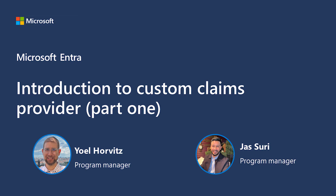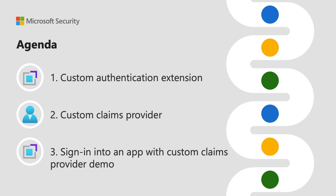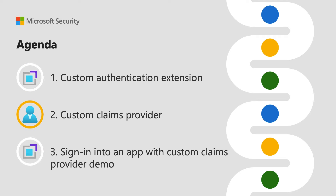Hello everyone and welcome to the Microsoft Entra Learning series. Joel Orwitz and Jess Suri here. We are Program Managers in the Microsoft Identity and Network Access Group. Thank you so much for joining us today. In this first part of the Custom Claims Provider videos, we will introduce you to the Azure Active Directory custom extensions, the Custom Claims Providers, and how they can help you customize security tokens issued by Azure Active Directory that return to your application, and a demo that shows the sign-in experience with applications that utilize a Custom Claims Provider.